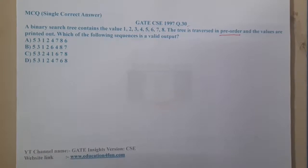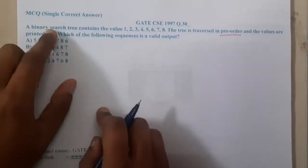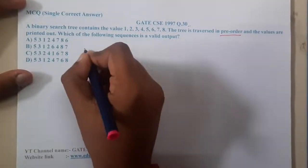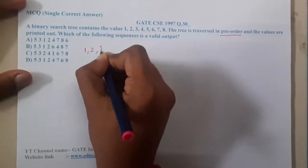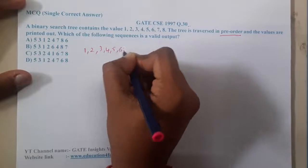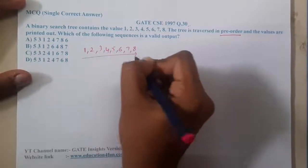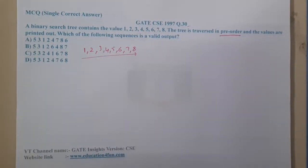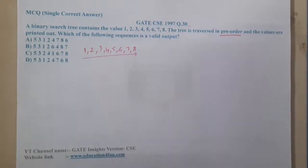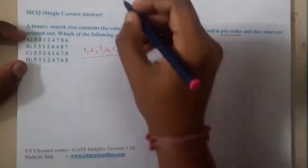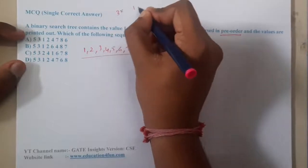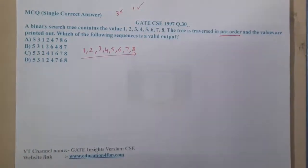We have the pre-order options given, and we already know the in-order of a binary search tree — it is nothing but the ascending order of numbers. So now we have the pre-order, and we can construct a tree using both. Among the three wrong options and one correct option, let us try constructing trees and observing which is the valid sequence.